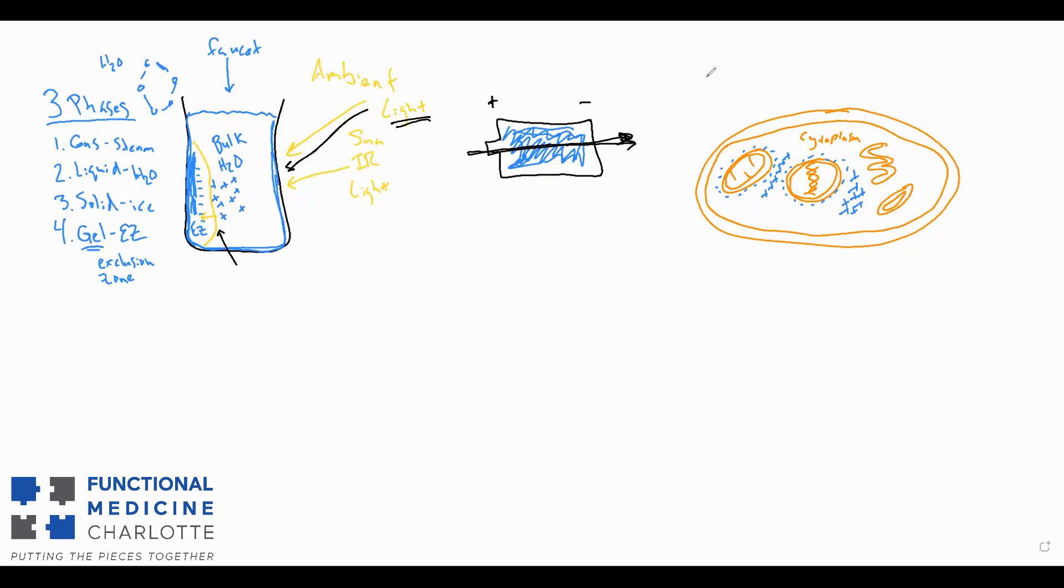When you've got positives and negatives, that can be a battery or can be used to do work. If you shine light on this cell, like light from the sun or infrared light from a laser, the infrared light increases the size of the exclusion zones around these different bodies, increasing the difference in charge differential from negative to positive, increasing your ability to do more work. Literally being well hydrated and exposed to light increases your energy as a human being.